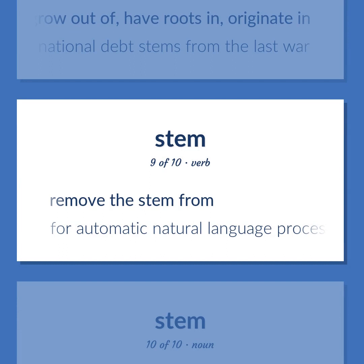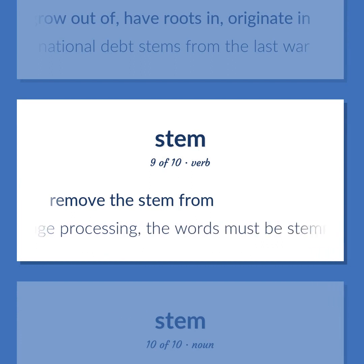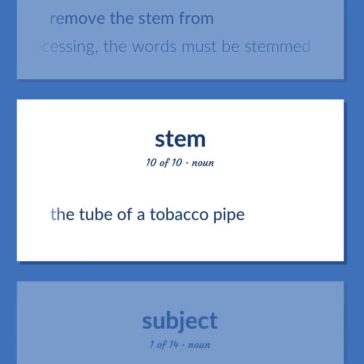Remove the stem from. For automatic natural language processing, the words must be stemmed. The tube of a tobacco pipe.